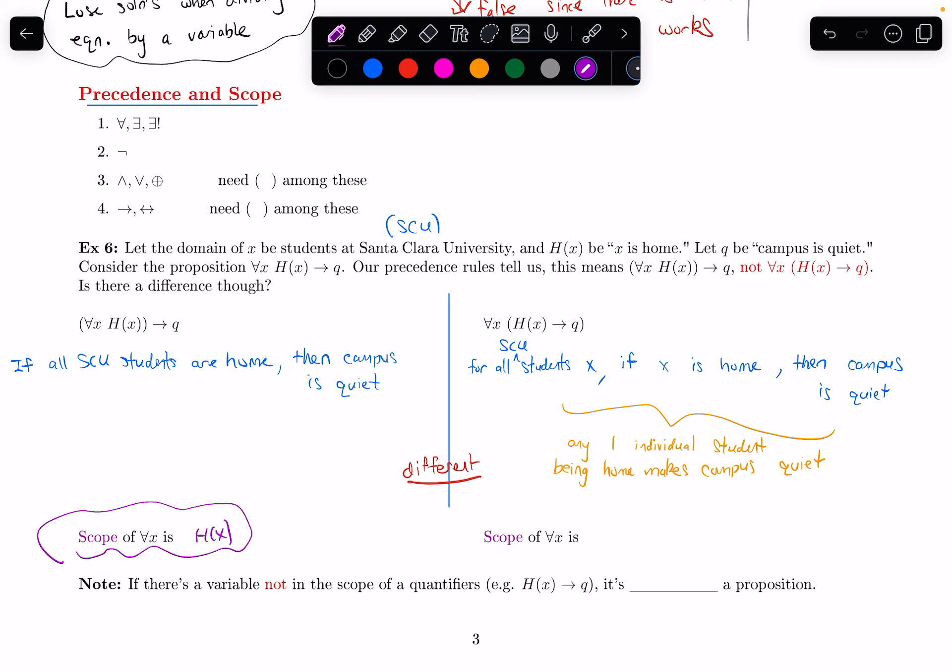In the second statement, the for all X applies to this whole thing in the parentheses. So the scope is H(x) implies Q. And the point of this example is to help demonstrate that in general, when we change the scope of a quantifier, it can change the meaning of our propositions.